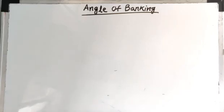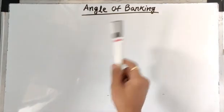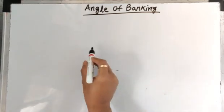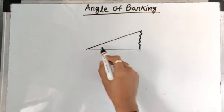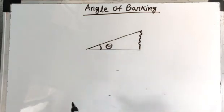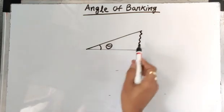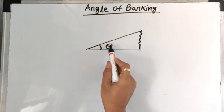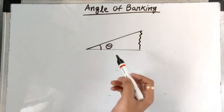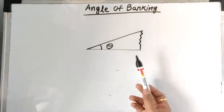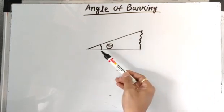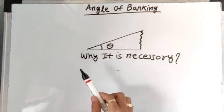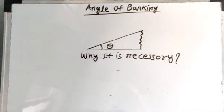Let's study the third application of uniform circular motion: angle of banking. Angle of banking means the outer edge of the road is inclined over the inner edge through a certain angle along the curve. This angle theta is called the angle of banking, and this arrangement is made only along the curve. The process of raising the outer edge of the road over the inner edge along the curve by a certain angle is called banking of roads.